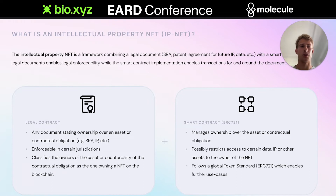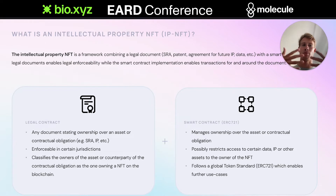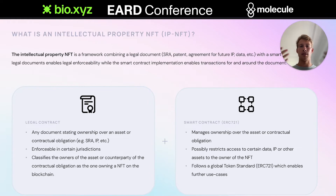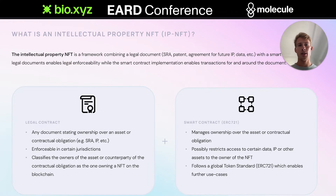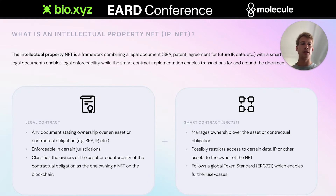Let's return to the legal contract because it is important to understand how those two things work together. The legal contract actually references the smart contract, and the smart contract references the legal contract, making sure there's a bond which can't really be broken. The legal contract is actually two contracts: one could be a sponsored research agreement, a patent, an agreement for future IP, or a sales agreement for a data asset. The second agreement states that the parties agree to transfer ownership onto someone who holds a certain token on-chain.